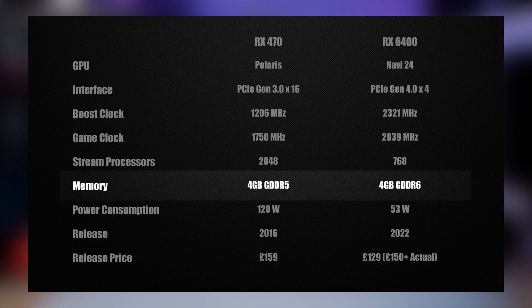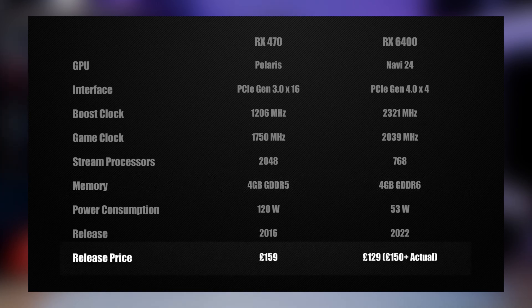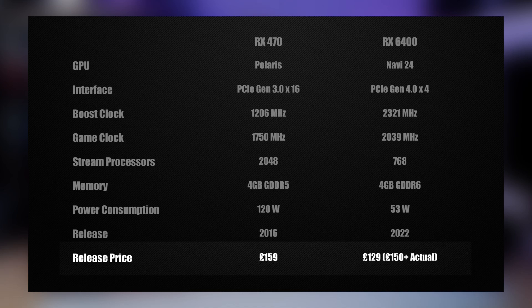Even though the two graphics cards are about three generations apart, equating to a six-year difference, there are quite a few similarities between them. Both cards are using four gigabytes of VRAM, and when you look at the pricing, there hasn't been a lot of change there either. The RX 470 was originally released with an MSRP of £159, whereas the RX 6400 was supposed to be around £129, but the actual price was more between £150 and £160, and it still is today.